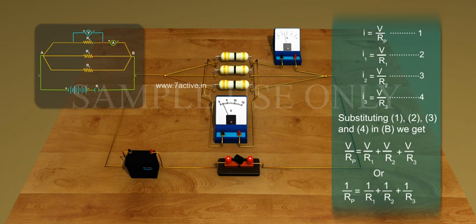1 by Rp equals 1 by R1 plus 1 by R2 plus 1 by R3.